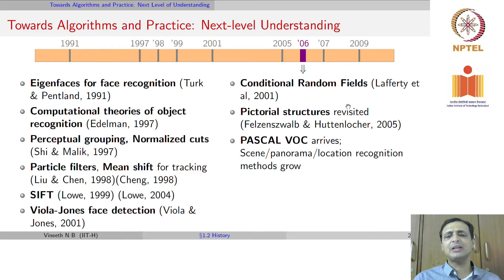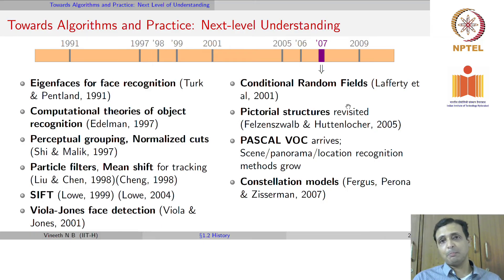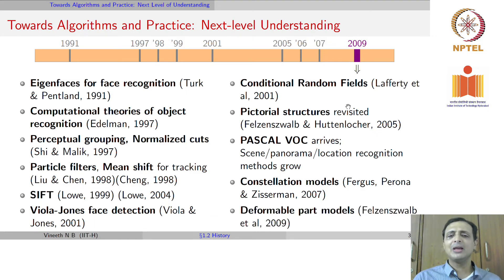Around that time, between 2005 to 2007, a lot of methods for scene recognition, panorama recognition, location recognition also grew. Constellation models, which were part-based probabilistic generative models, also grew at that time to recognize objects in terms of parts and how the parts were put together in the whole. Deformable part models, a very popular approach, considered one of the major developments of the first decade of the 21st century, came in 2009.